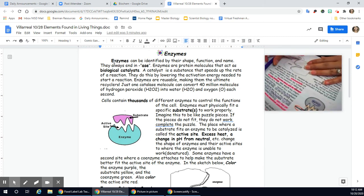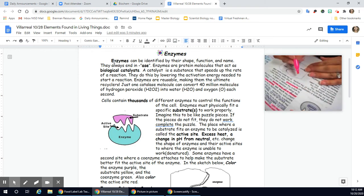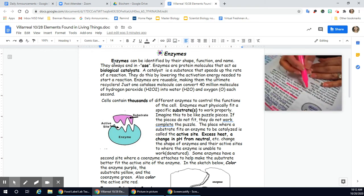Some enzymes have a second site where a coenzyme, co means together, right, to work together. Coenzymes attaches to help make the substrate fit better on the active site. In this sketch below, so in this doodle here, color the enzyme purple. So enzyme needs to be purple. The substrate, yellow.